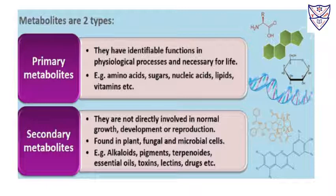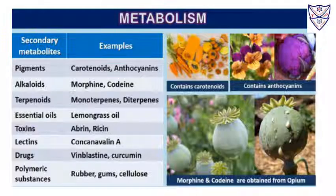Secondary metabolites are not directly involved in normal growth, development, or reproduction, but they are found in plants, fungal, and microbial cells — like alkaloids, pigments, terpenoids, essential oils, toxins, lectins, and drugs. Examples include pigments like carotenoids and anthocyanins; alkaloids like morphine and codeine; terpenoids; essential oils like lemongrass; toxins like abrin and ricin; lectins like concanavalin; drugs; and polymeric substances like rubber, gum, and cellulose.